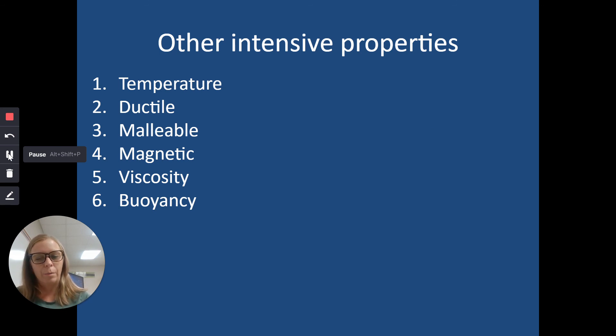Here are some other intensive properties. The temperature - it doesn't matter if it's big or small, the temperature will stay the same. If it's ductile, it's always going to be ductile. If it's malleable, magnetic, the viscosity of something or the buoyancy of something. These are all things that stay the same no matter how big or small the object is.